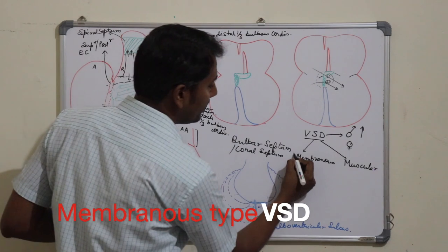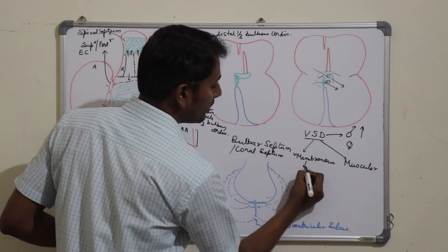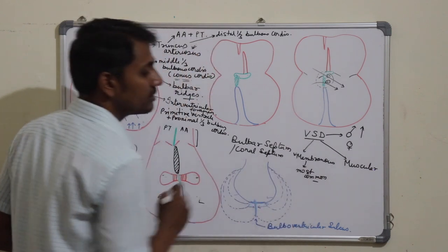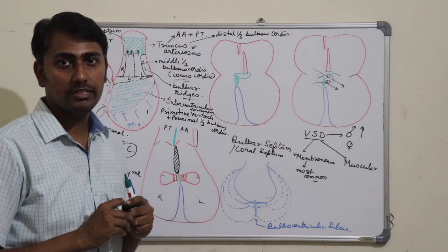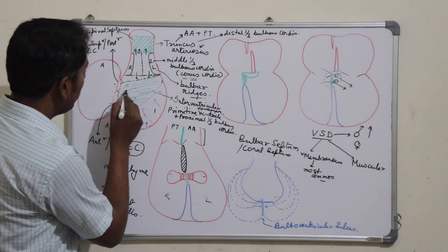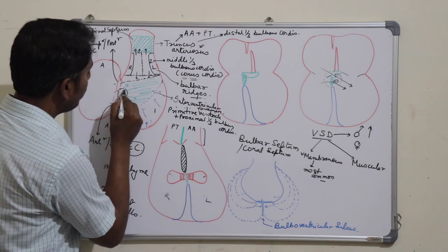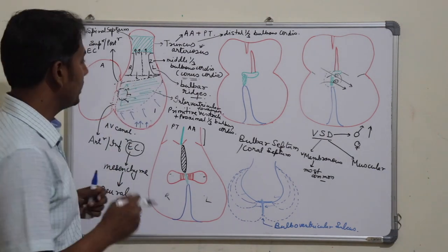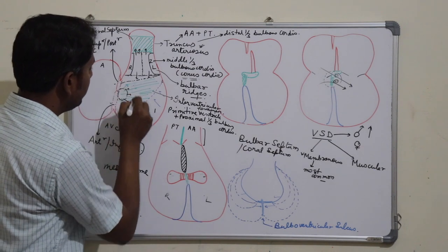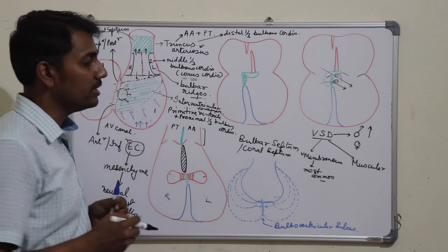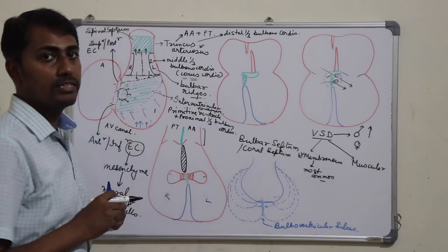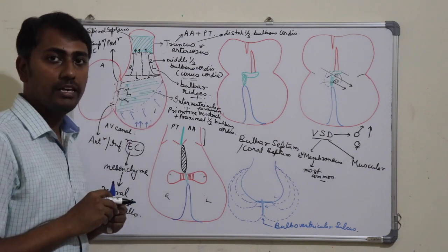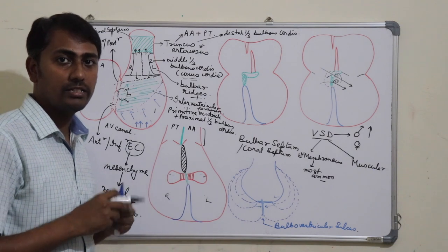The membranous type of ventricular septal defect is the most common type. It occurs due to the failure or defect in the proliferation of the ventricular endocardial cushion to form the membranous part of the interventricular septum. There will remain a gap in the interventricular foramen, leading to the membranous type of ventricular septal defect.